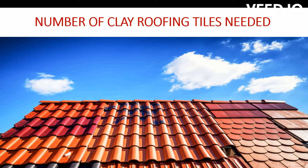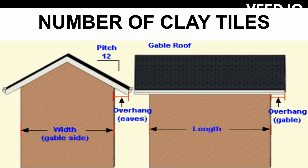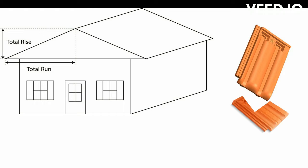Before we calculate the clay tiles, we want to look at the gable roof that we are going to tile. This is the length and this is the width of the roof. We have the overhangs here on the eaves side and on the gable side as well. We want to get the roof area, so we are going to start by calculating the rafter length first. Our house has a length of 12 meters and a width of 10 meters.